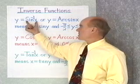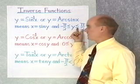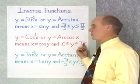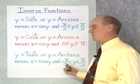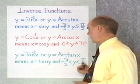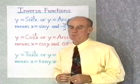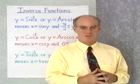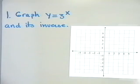So, inverse sine is always between negative 90 and positive 90. Inverse cosine always goes from 0 to 180. And inverse tangent is always between negative 90 and positive 90. What I want to do next is go to the board and work a problem that reviews a little bit about inverse functions from algebra. We want to graph y is equal to 3 to the x and its inverse.